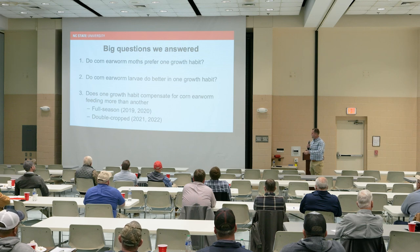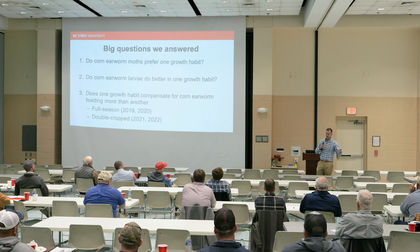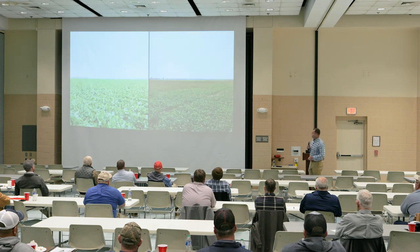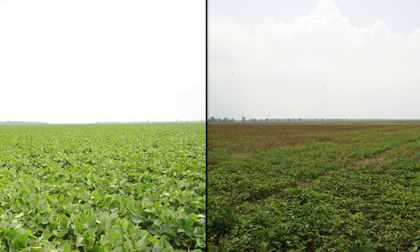I'm going to show you experiments in double crop beans because the answers were the exact same whether beans were planted double crop or full season. We thought double crop was the most challenging time for compensation: we already have less yield potential, less time in the growing season to make it up, and more insects at that time of year — later in the season when more generations, more heat units, and more insects are in the environment.